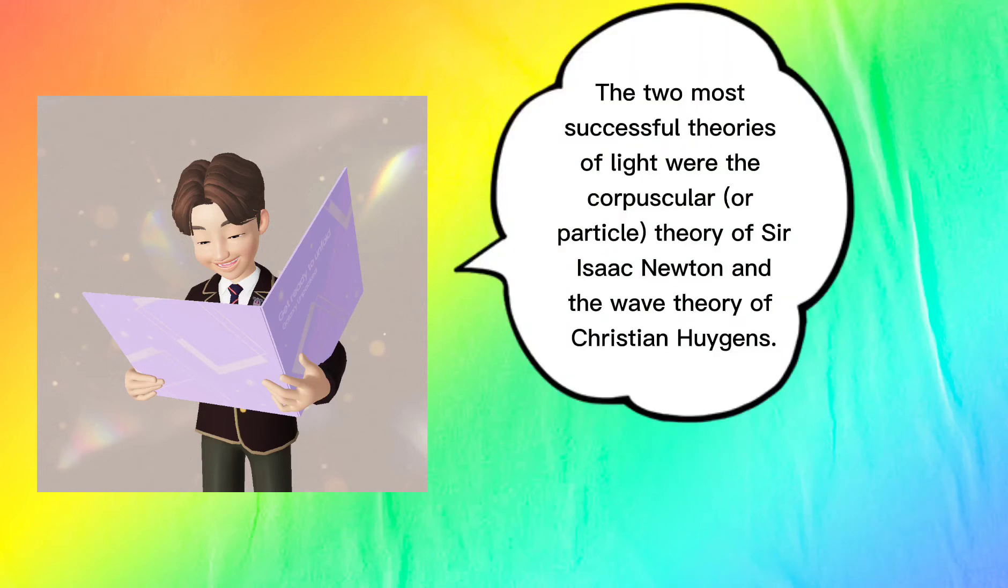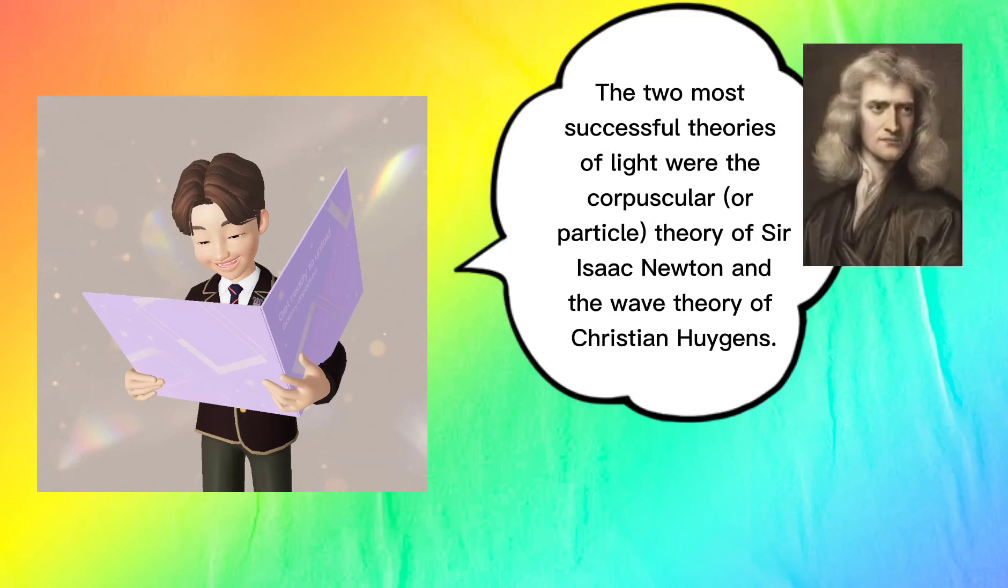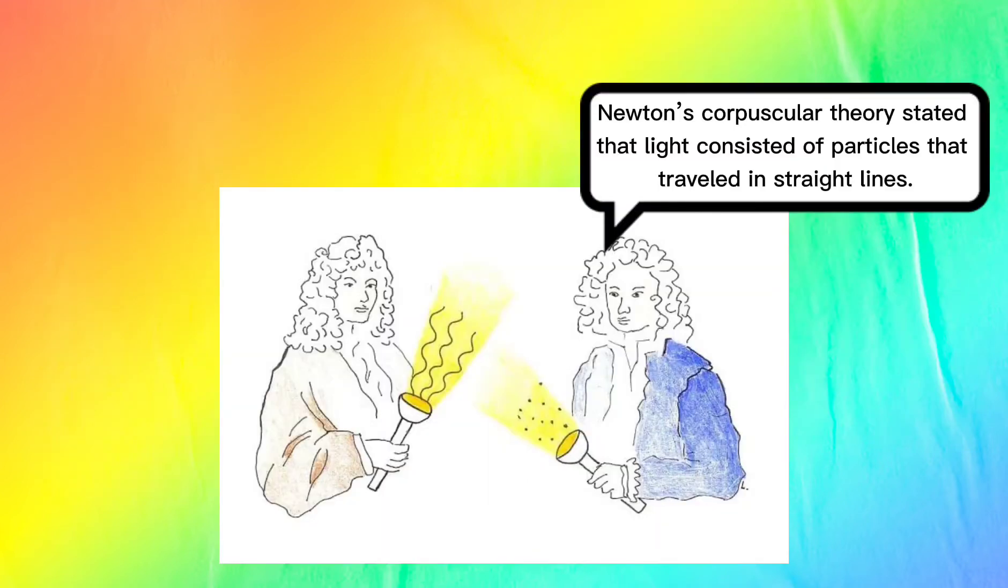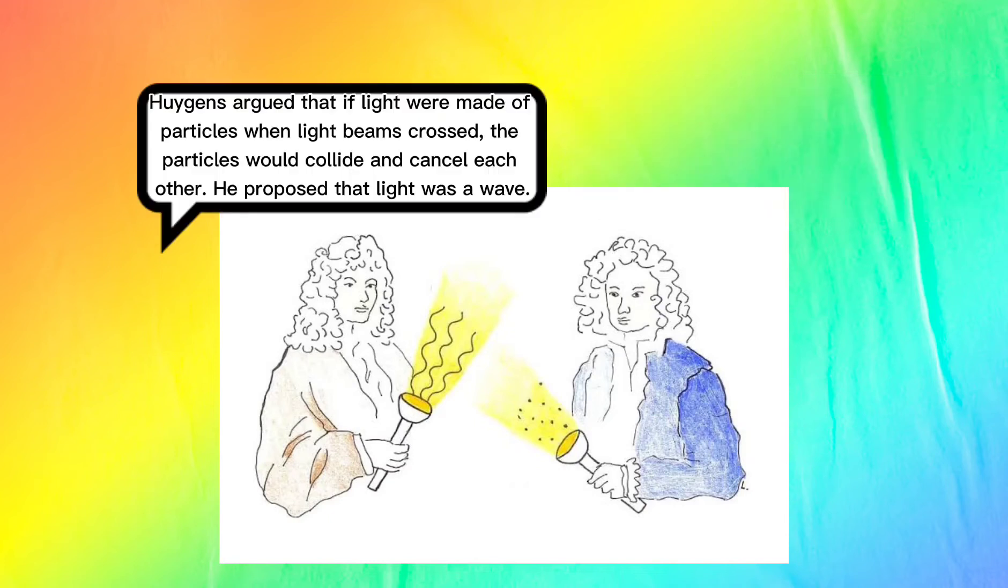The two most successful theories of light were the corpuscular theory of Sir Isaac Newton and the wave theory of Christian Huygens. Newton's corpuscular theory stated that light consisted of particles that traveled in straight lines. While Huygens argued that if light were made of particles, when light beams crossed, the particles would collide and cancel each other. He proposed that light was a wave.